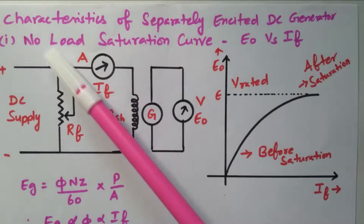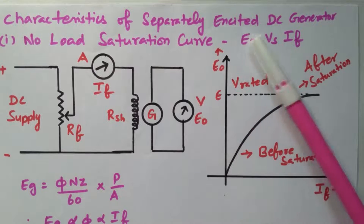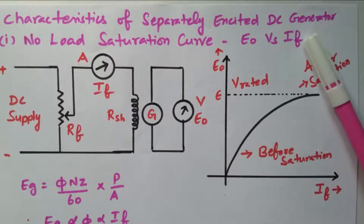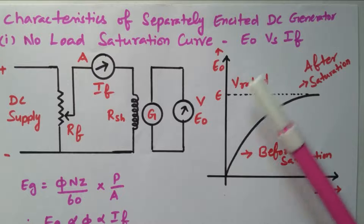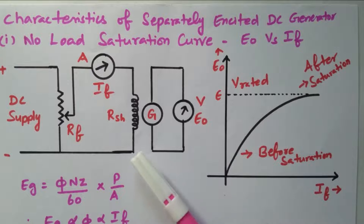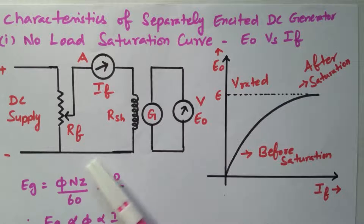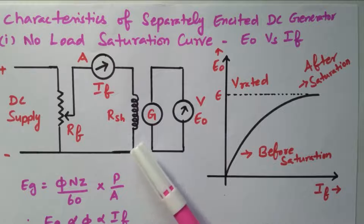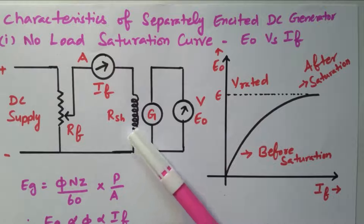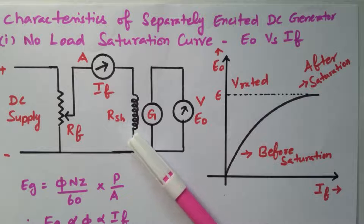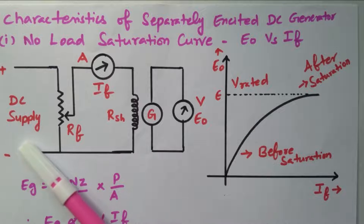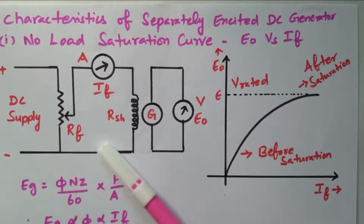Now we will see the characteristics of a separately excited DC generator. There are two types available: separately excited and self-excited. In separately excited, the field coil is excited separately. The two major parts of a DC generator are the field and the armature, and the field is excited separately — that is why it is called a separately excited DC generator.